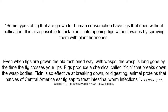Some types of figs grown for human consumption ripen without pollination, and it's also possible to trick plants into ripening figs without wasps by spraying them with plant hormones. This is similar to what we do for agricultural purposes — with tomatoes, we pick them green, ship them in large boxes, and then spray them with the hormone ethylene to cause them to ripen. A similar approach can be used with figs so that people don't have to rely on wasps for pollination or worry about eating wasp parts.